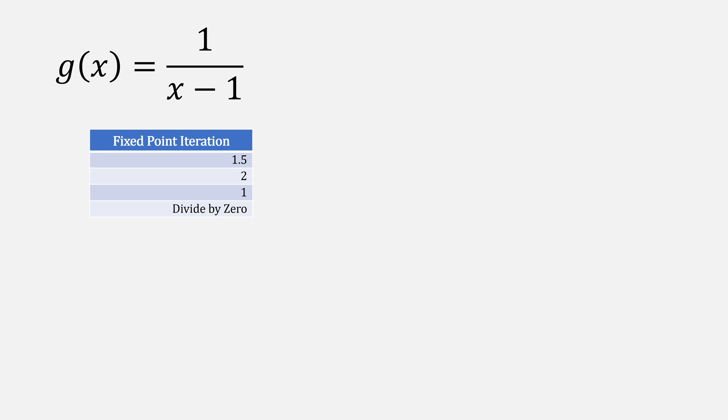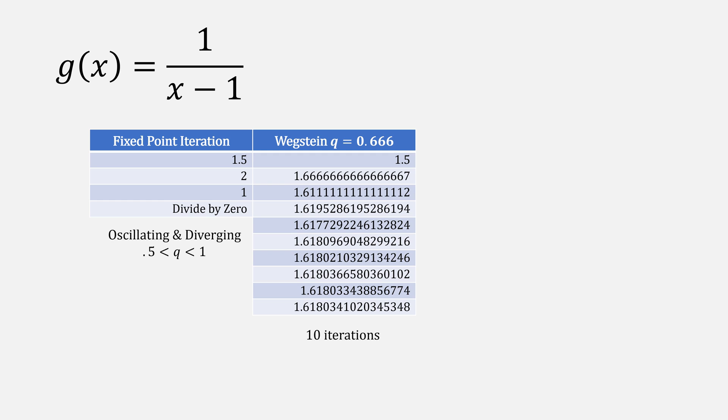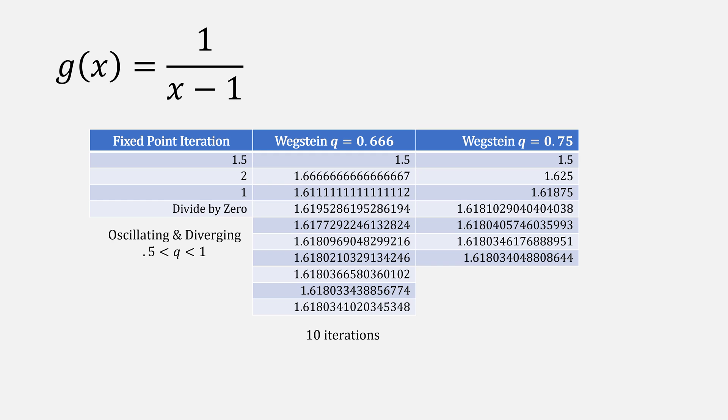When our g of x is 1 over x minus 1, fixed-point iteration diverges, and Wegstein's method can induce convergence if we choose the value between 0.5 and 1. If we chose the value of 2 thirds, it only takes 10 iterations to converge, and if we chose 3 quarters, it takes 7 iterations.